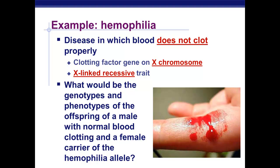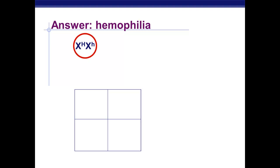All right, did you do it? All right, let's look at our answer. So our female, our mom, she's a carrier, which means she has one normal X chromosome and one X chromosome with hemophilia. Our dad is normal clotting, so we know his X chromosome is normal.